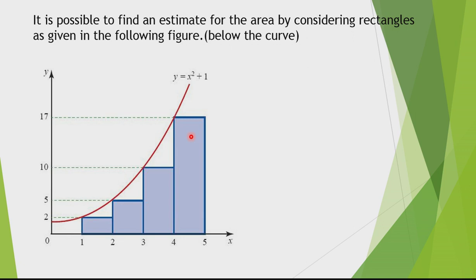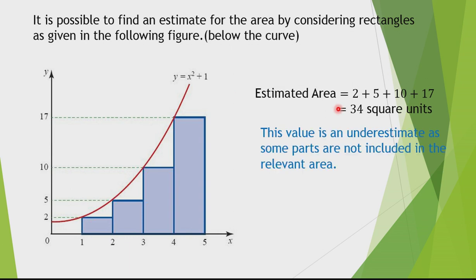In this case, you can see that I can find this area by 1 into 2, 2 plus 1 into 5, 1 into 10, 1 into 17. Just the addition of those areas of rectangles which will result in 34 square meters. You know that this is not an exact answer. Therefore, I have considered it as an estimated area. This is considered an estimate as some parts are missing. Some parts need to be added to get the exact area. This means this is a lesser value than the exact area under the curve. That's why this is considered as an underestimate.